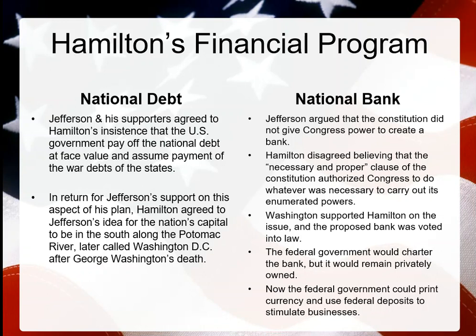On the National Bank, Jefferson did not like it. He felt the Constitution did not give Congress the power to create such a bank and preferred privately owned banks. Hamilton disagreed, believing the necessary and proper clause of the Constitution authorized Congress to do whatever was necessary to carry out its enumerated powers. Washington supported Hamilton on the issue, and the proposed bank was voted into law. The federal government would charter the bank, it would remain privately owned, and the government could print currency and use federal deposits to stimulate businesses.